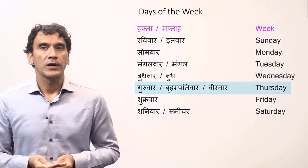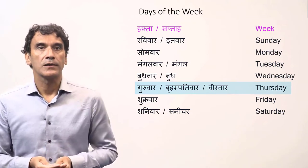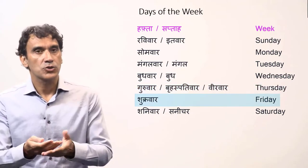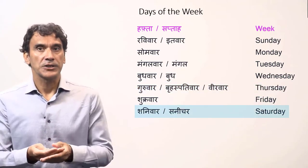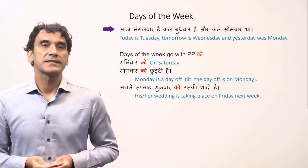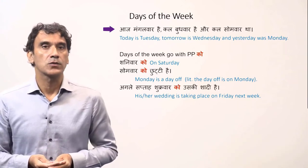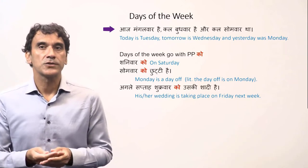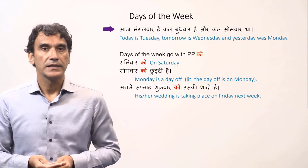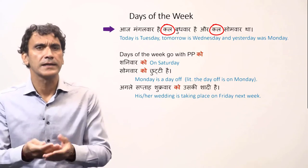Thursday has a few alternate forms: 'guruvar', 'braspativar', or less rarely but quite commonly used, 'veerwar'. Friday is 'shukravar'. Saturday is 'shaniwar' or 'sanichar'. Example sentences: 'aaj mangalwar hai' (today is Tuesday), 'kal buddhwar hai' (tomorrow is Wednesday), 'kal somwar tha' (yesterday was Monday). The word 'kal' means both yesterday and tomorrow — it is always clear from context.